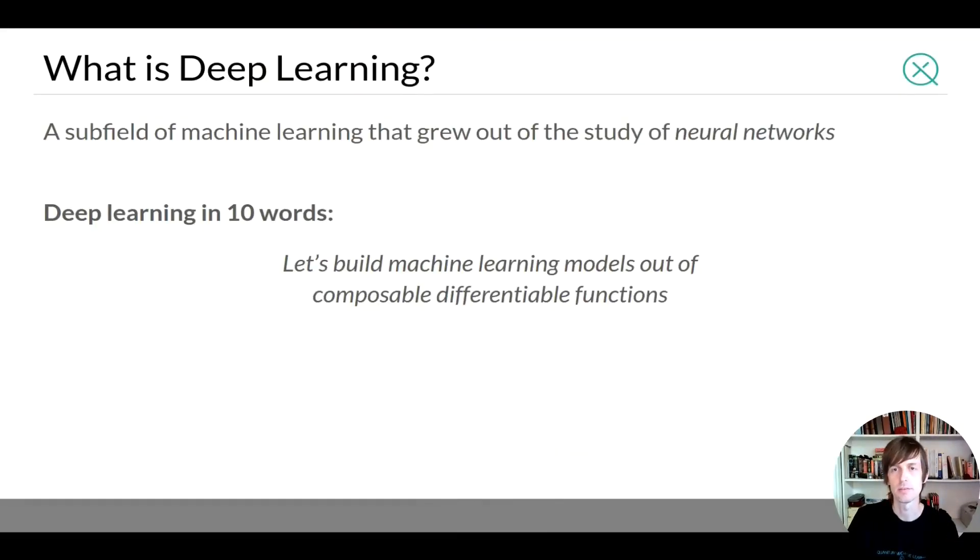So as point of reference, what is deep learning? It's a subfield of machine learning that originally grew out of the study of objects called neural networks. So as an idea we could say the following: Let's build machine learning models out of composable differentiable functions. That's a very high level summary of what deep learning means.